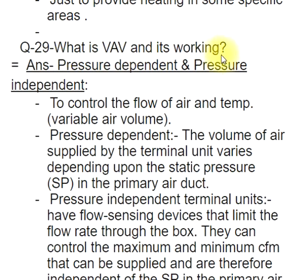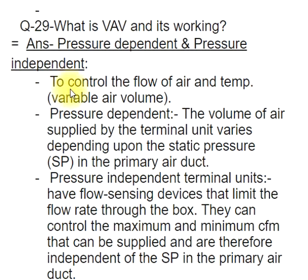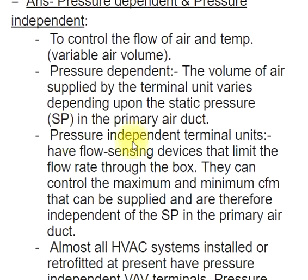Q29: What is VAV and its working? ANS: Pressure dependent and pressure independent. Used to control the flow of air and temperature — variable air volume. Pressure dependent: the volume of air supplied by the terminal unit varies depending upon the static pressure (SP) in the primary air duct. Pressure independent: terminal units have flow sensing devices that limit the flow rate through the box.